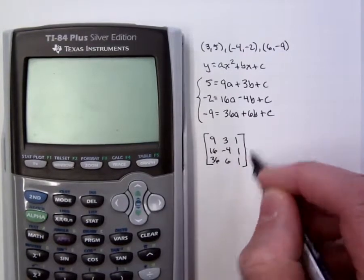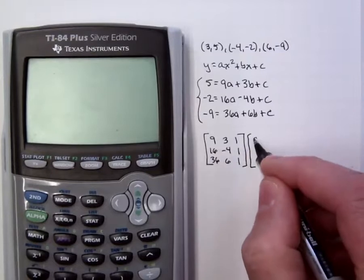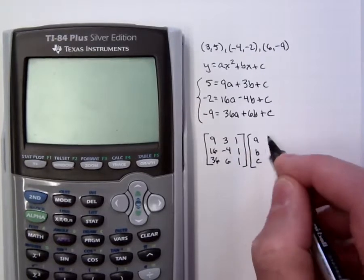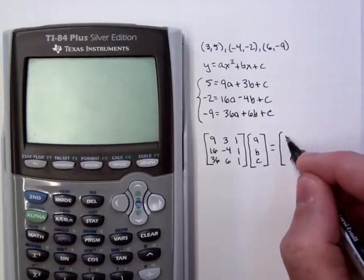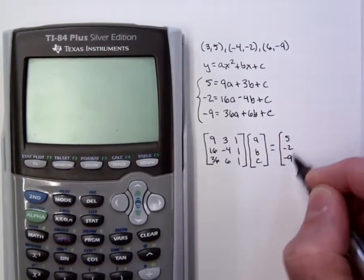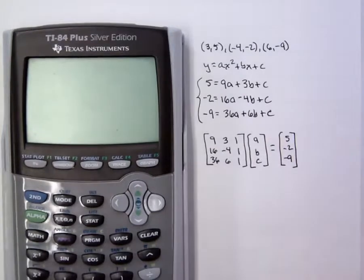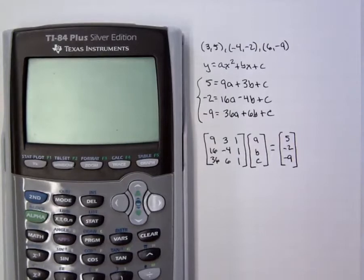Equal to a 3 by 1 containing 5, -2, and -9. And you can verify that this matrix equation is identical to the original system by performing a multiplication. And so you would have 9a times 3b times 1c equal to 5 in the top row and similarly on down the line.